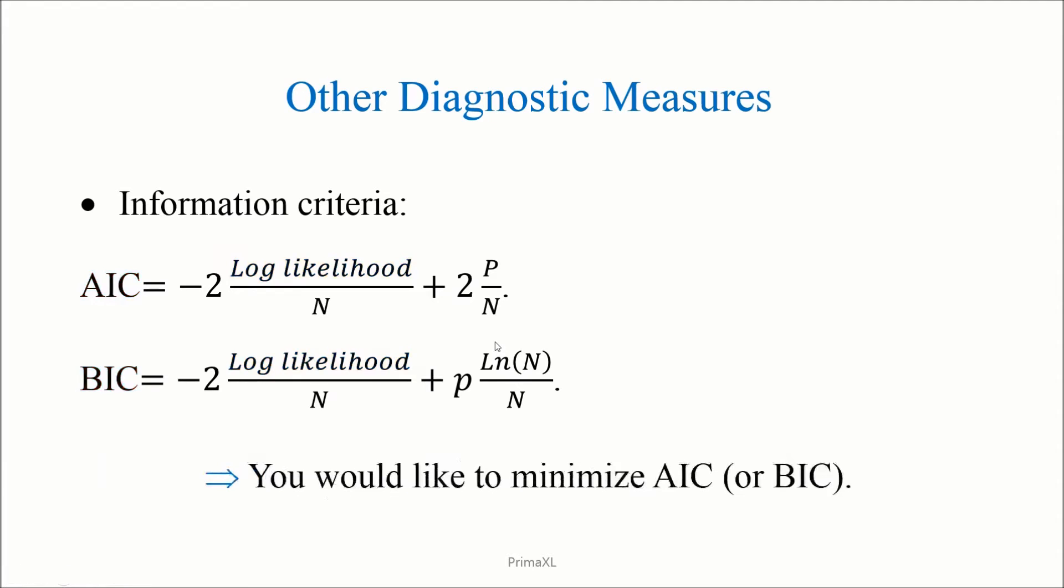What is the use of the AIC or the BIC? It is a very useful measure in optimizing the linear model. We would like to minimize the information criteria. To understand why, first, we can notice that the information criteria has two competing terms.